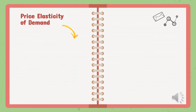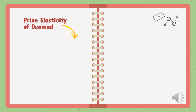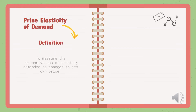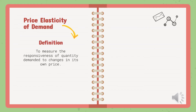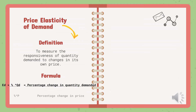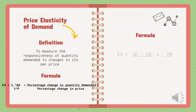Price Elasticity of Demand is used to measure the responsiveness of quantity demanded to a change in its own price. The formula used is the percentage change in quantity demanded divided by the percentage change in price.